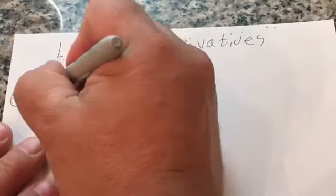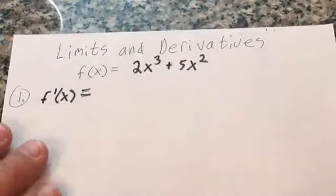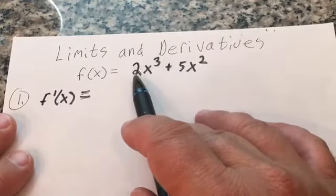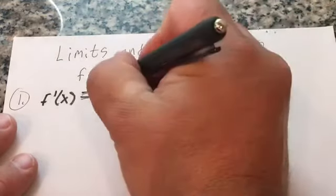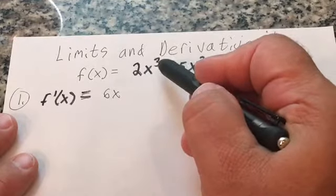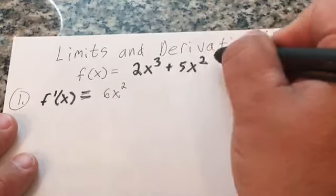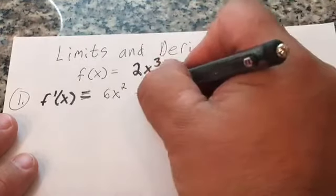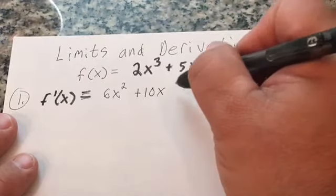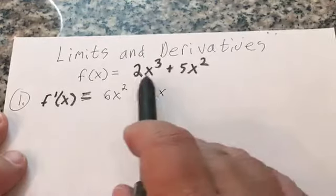The first thing I want to do is find the derivative using the power rule. We take the exponent 3 and multiply it by the 2 to give us 6, then subtract 1 from the exponent: 3 minus 1 gives 6x squared. Then for the second term, 2 times 5 is 10, and subtract 1 from the exponent of 2, giving 10x. So the derivative of 2x cubed plus 5x squared is 6x squared plus 10x.